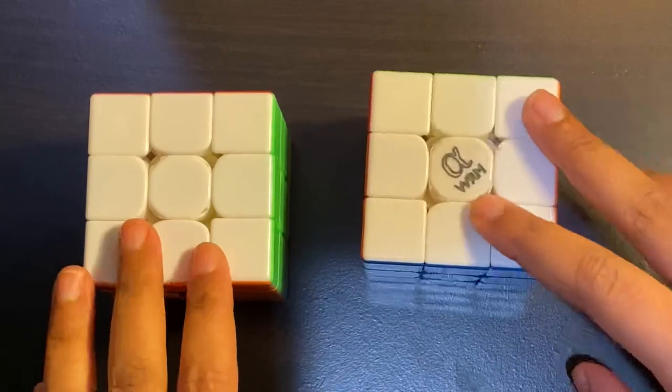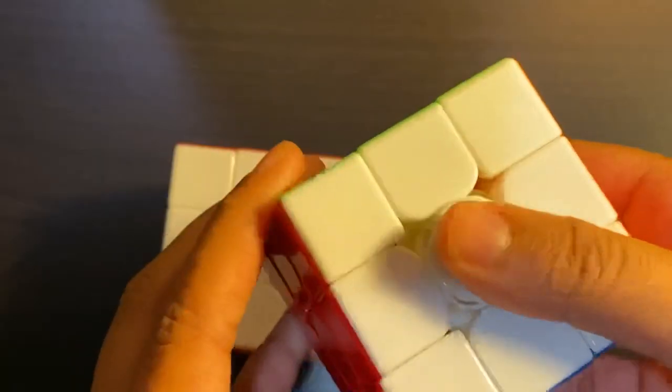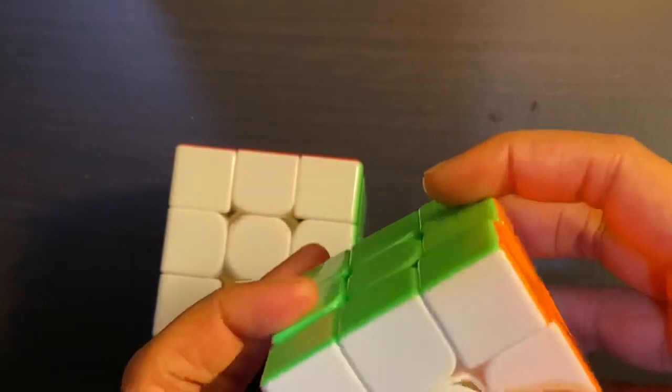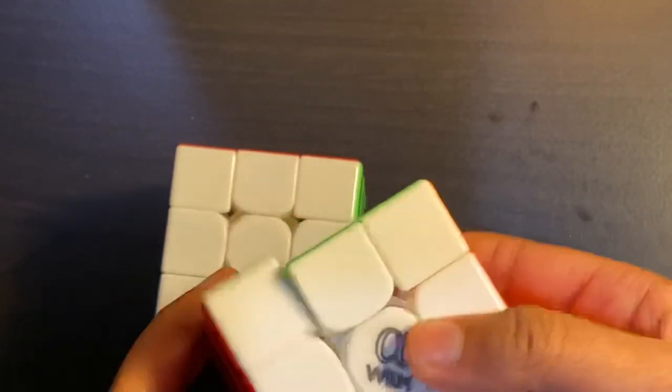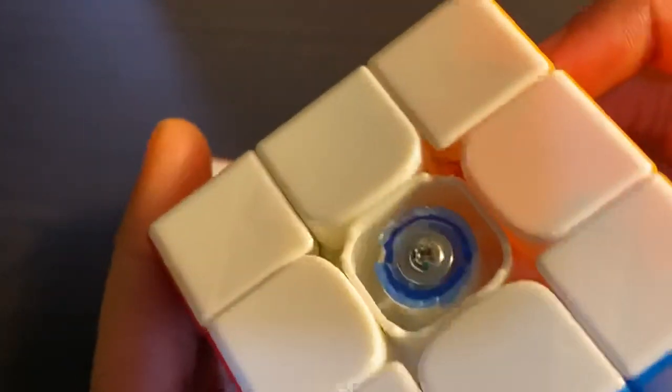You can definitely hear the difference in sound between these two WRMs. I did see on their website that the pieces and the core are lubed with the Angstrom Project A and B lubes. The core is actually lubed with Angstrom Project B, though it is not visible.